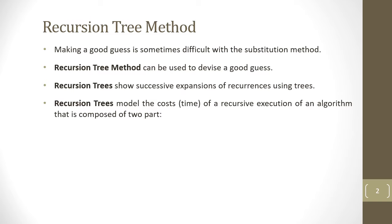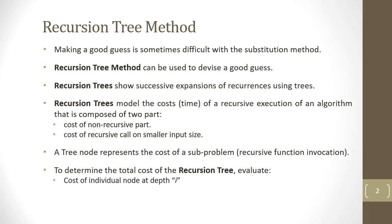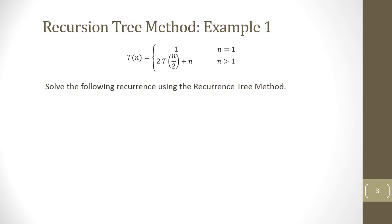Recursion trees show successive expansions of recurrences using trees. Recursion trees model the cost or time of a recursive execution of an algorithm that is composed of two parts: the cost of the non-recursive part and the cost of the recursive calls on smaller input size. A single tree node represents the cost of a sub-problem. To determine the total cost of the recursion tree, we evaluate the cost of individual nodes at depth i, sum up the cost of all nodes at depth i, and sum up all per-level costs.